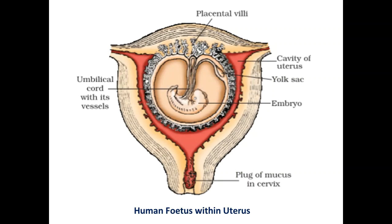So with this description, the NCERT diagram of human fetus within the uterus should be very clear to all of you. This diagram is from the NCERT book, and understanding it required all the extra descriptions we went through. This content is also needed as reference in the next chapter, so it is all very important.